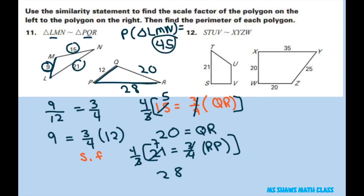And then for this one, the perimeter of triangle PQR. And just add 12 plus 28 plus 20 and that gives you 60. So that's the answer there.